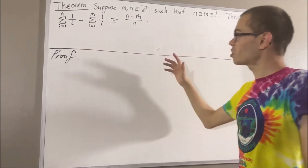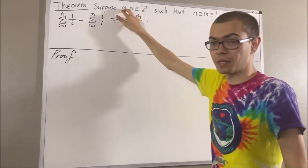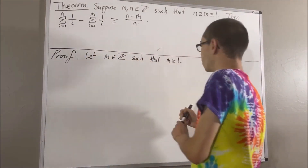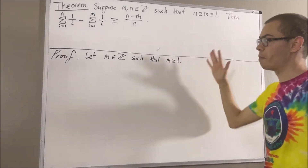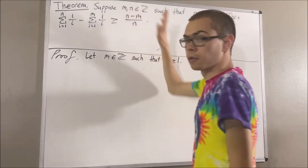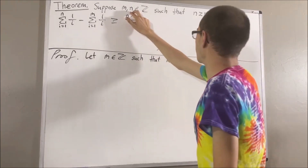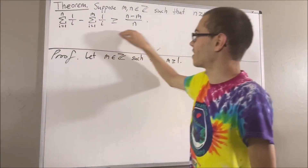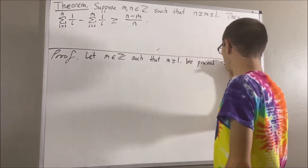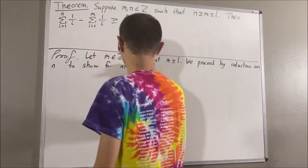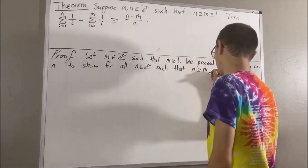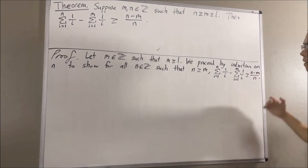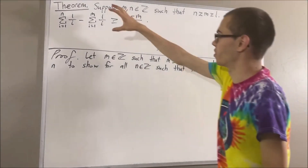To start off the proof, let's give ourselves an arbitrary integer m where m is greater than or equal to 1. From here, we are going to proceed by induction on n. We are going to show for all integers n such that n is greater than or equal to m, we have that this is true. And if we can prove this, then this will amount to proving the theorem.